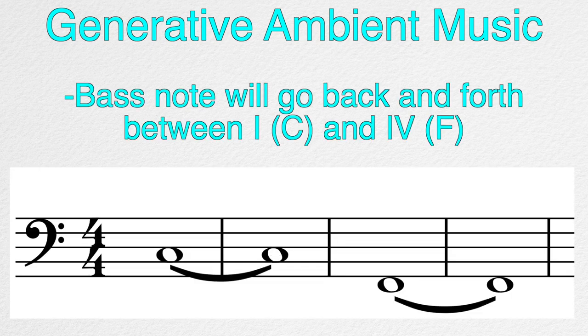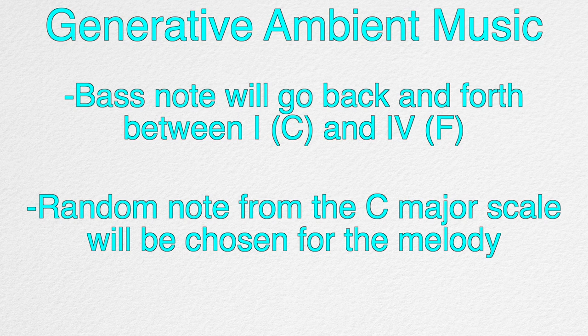The next thing to consider is the generative aspect. The bass note will go back and forth between C and F. The bass will play C for two measures, then switch to F and play that note for two measures, repeating that pattern for all eternity. And the patcher will randomly choose a note from the C major scale. So the music will sound something like this.